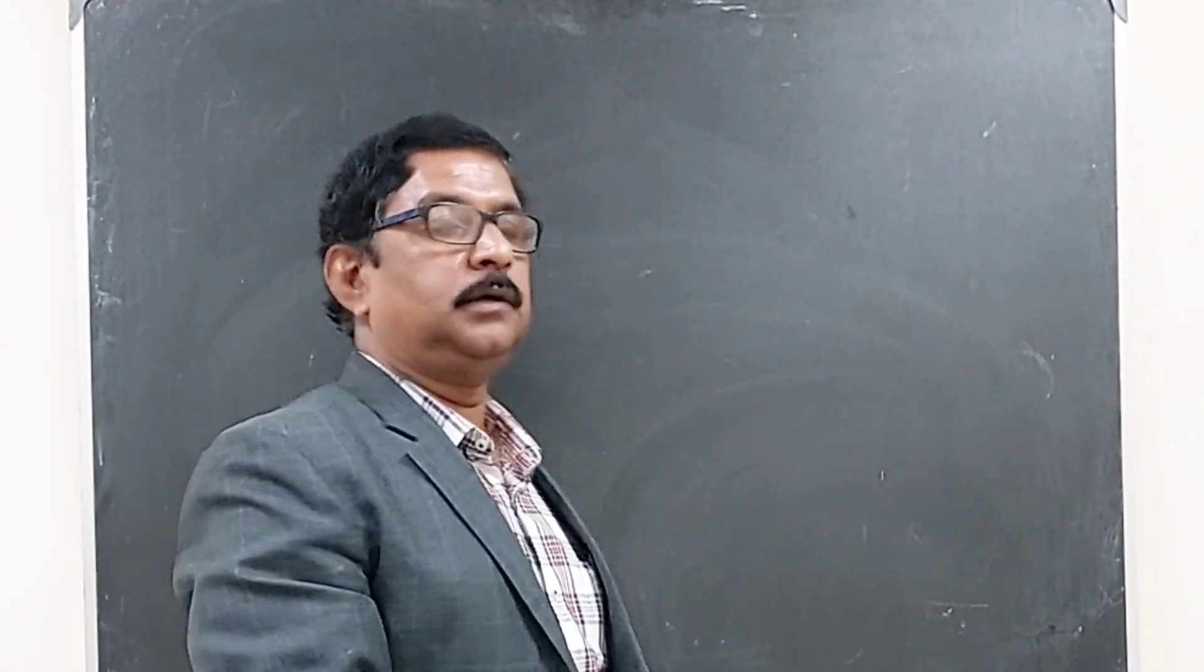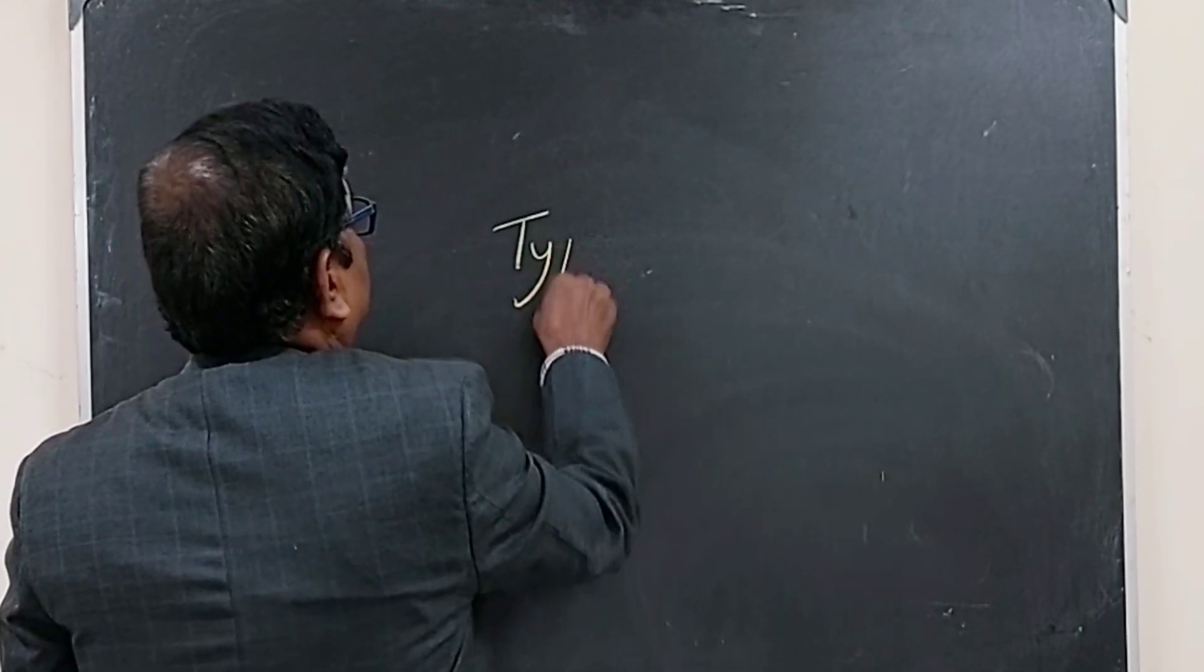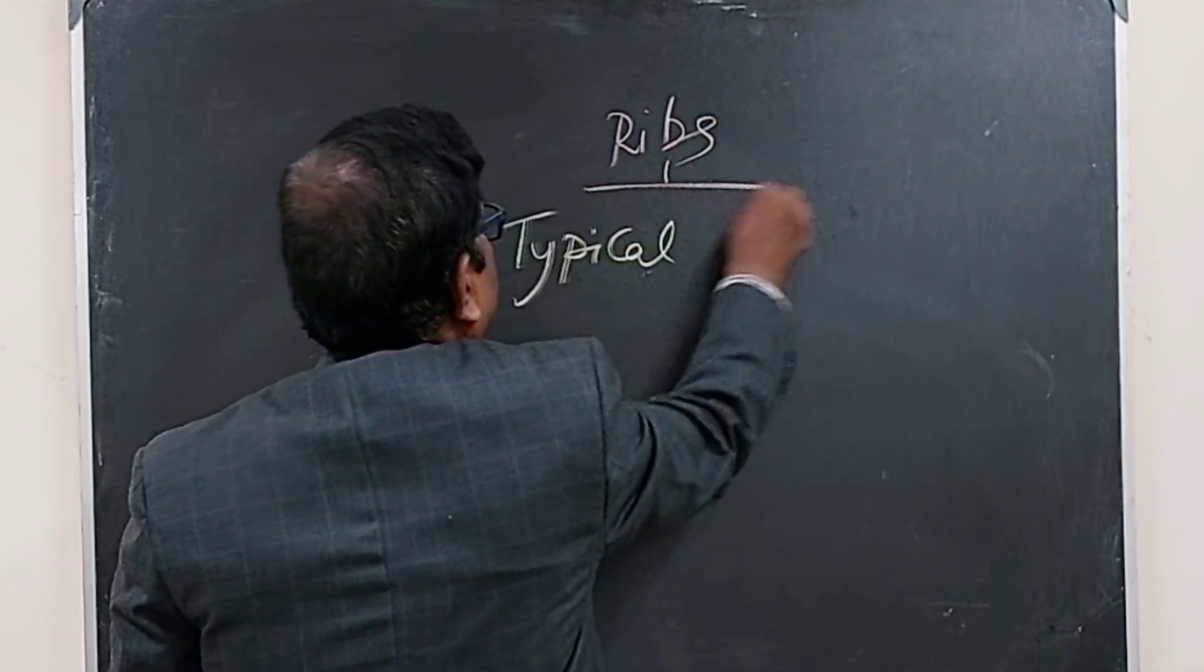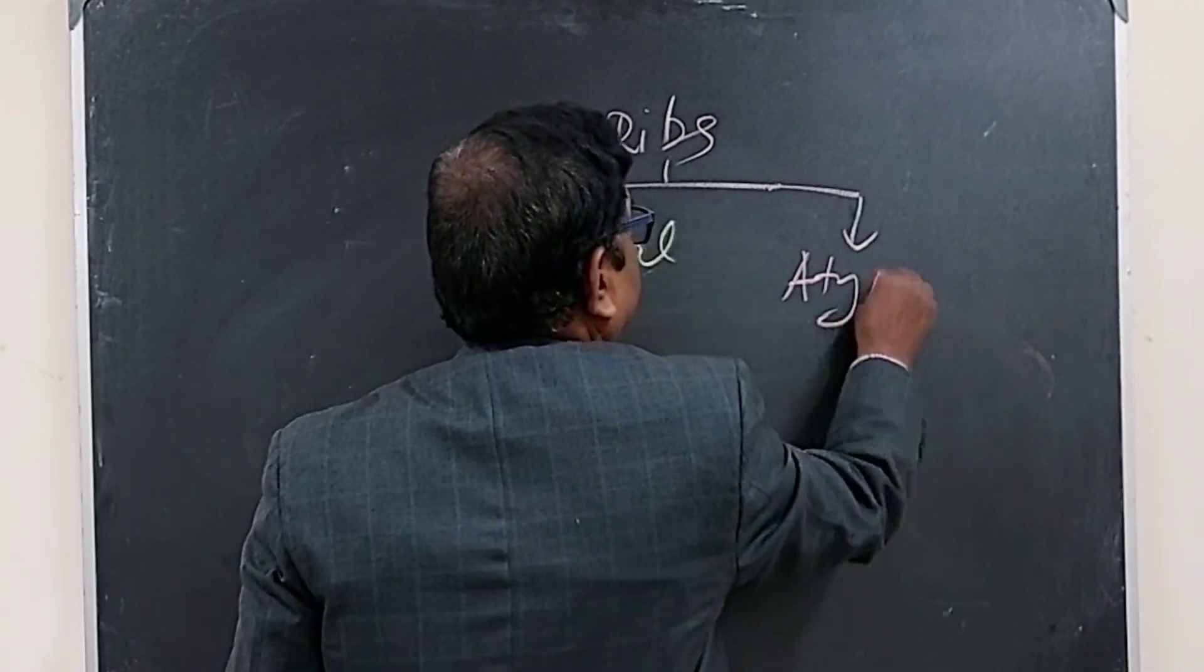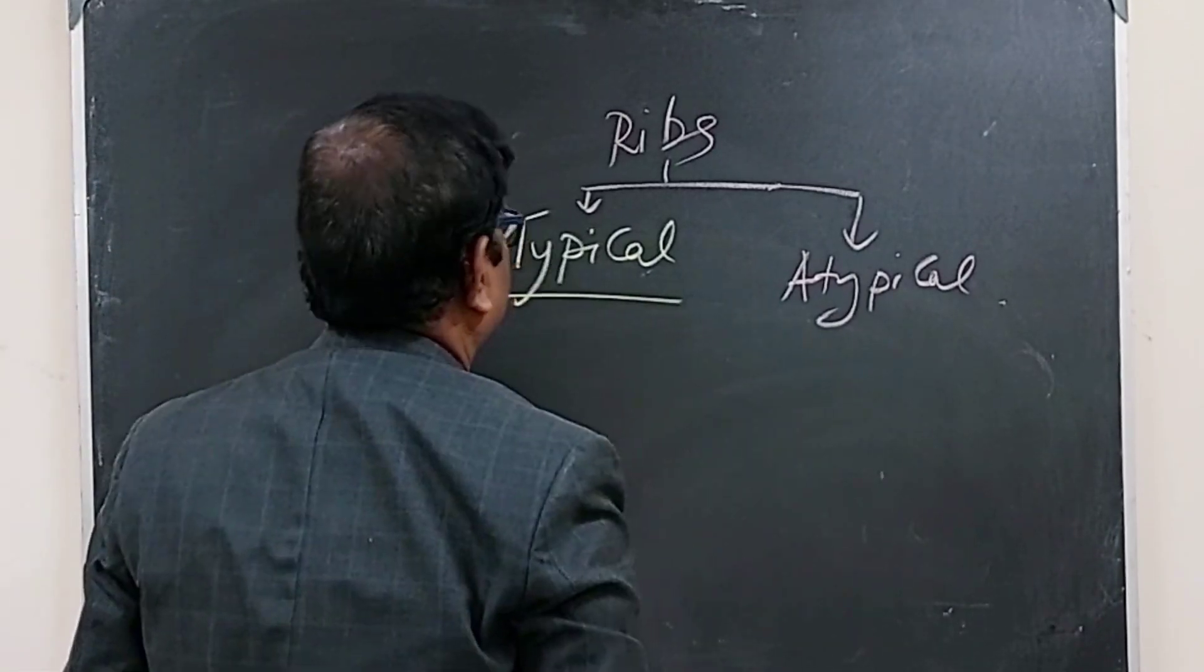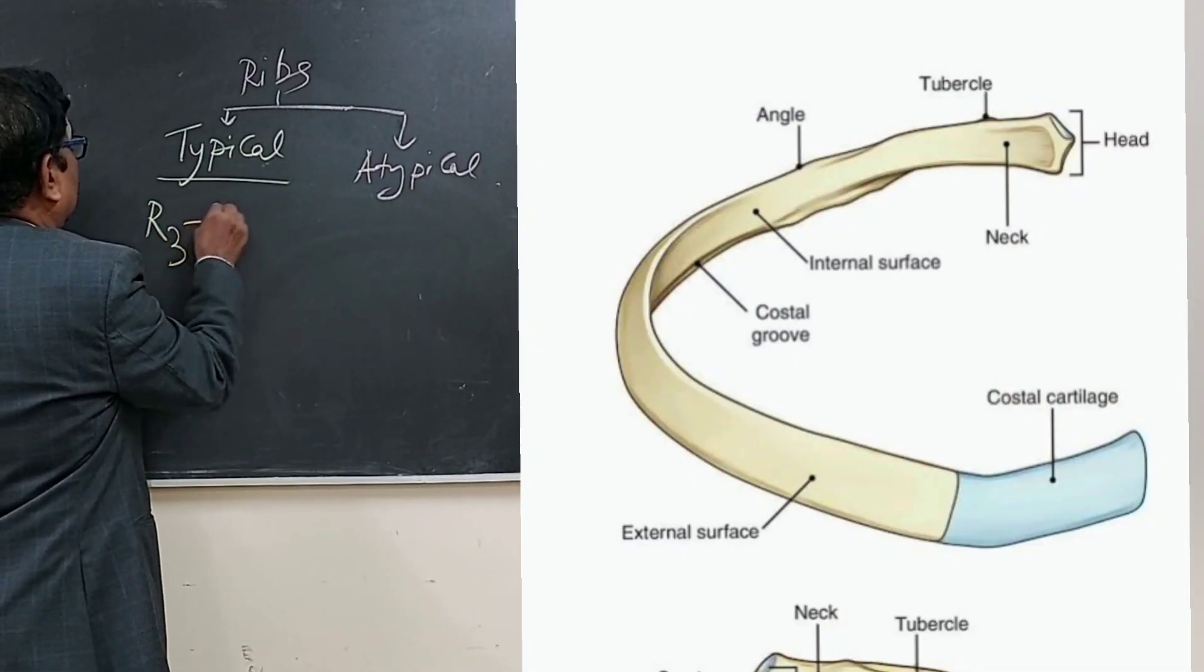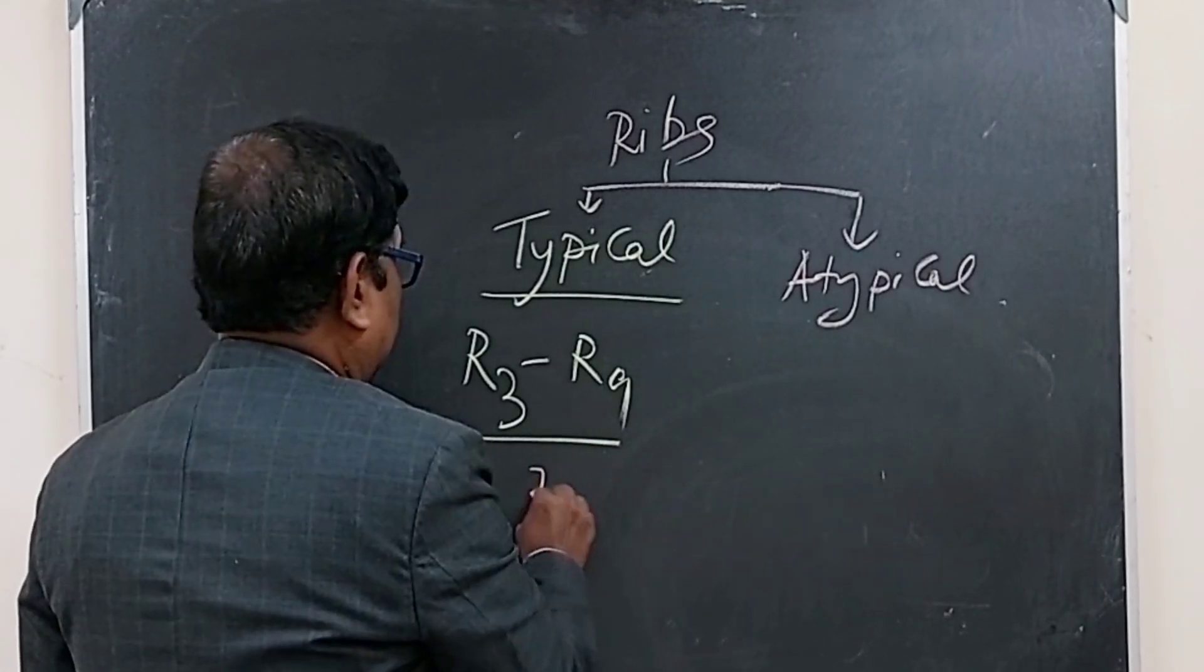And another classification on the basis of anatomical features. And this classification will be like this. Ribs - one is typical and another one is atypical. And typical ribs means which are similar in the anatomical features, like rib number 3 to rib number 9. These 7 ribs are typical ribs.